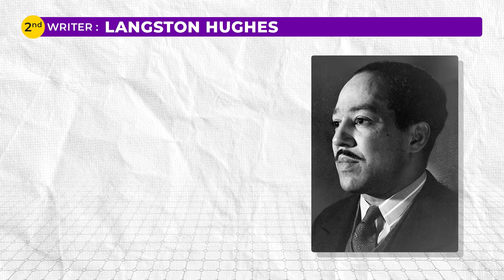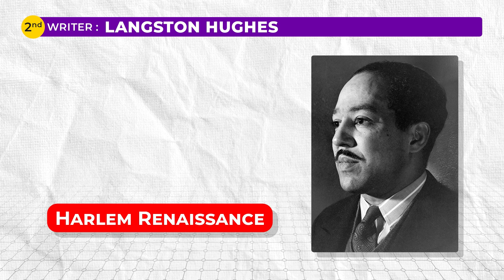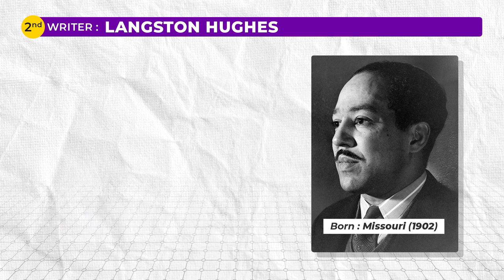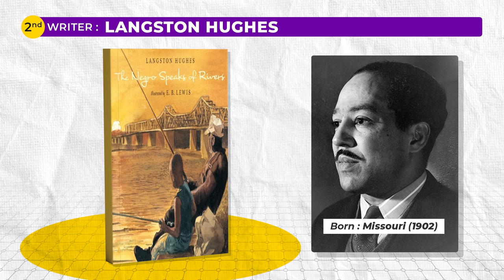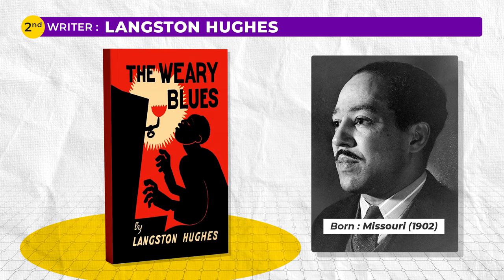The second major American writer we are going to talk about is Langston Hughes. He was an essential part of the Harlem Renaissance, a period bursting with African-American cultural expression. Born in 1902 in Missouri, his writing became a mirror reflecting the experiences of black people in America. One of his notable works is The Negro Speaks of Rivers, a poem that traces the history of African-Americans through the metaphor of rivers, celebrating ancient rivers and connecting them to the enduring spirit of black people. The Weary Blues is another masterpiece, capturing the soulful essence of jazz music and its impact on African-American culture through vivid imagery and rhythmic language.